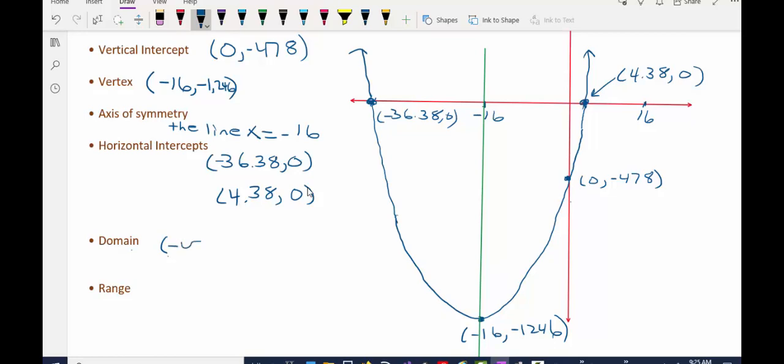And the way we write that in interval notation is that all x values as far as negative infinity, that's infinitely far to the left on the x-axis, all the way to positive infinity, which is infinitely far to the right on the x-axis. So we say between negative infinity and infinity, and we use a parenthesis rather than a bracket because you do not want to include infinity or negative infinity because neither of which are actually real numbers.